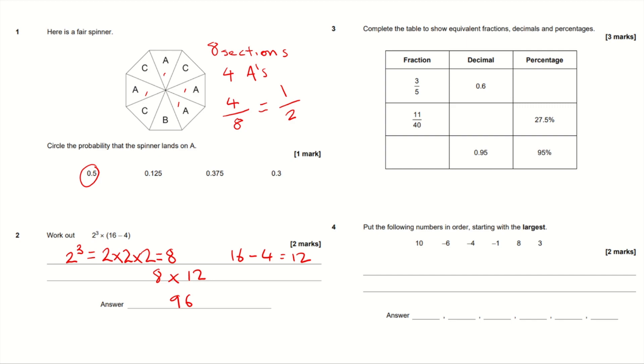Question 3. Complete the table to show equivalent fractions, decimals, and percentages. If you look at the first one here, we've got 3 fifths, 0.6, and what is that as a percentage?